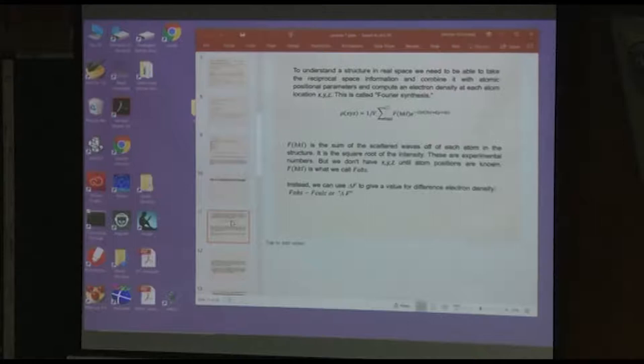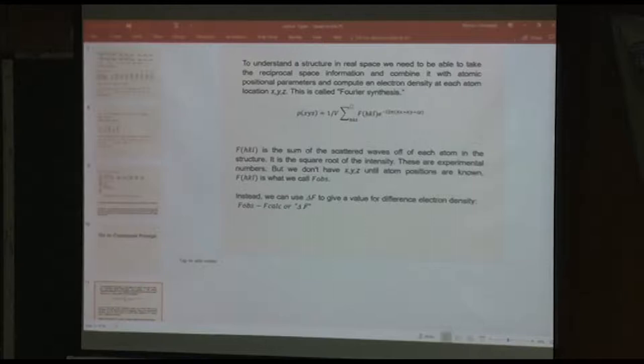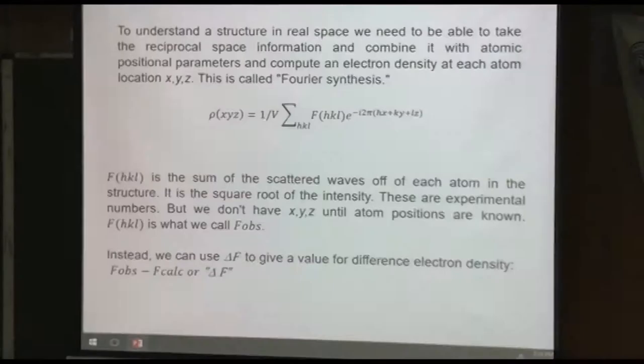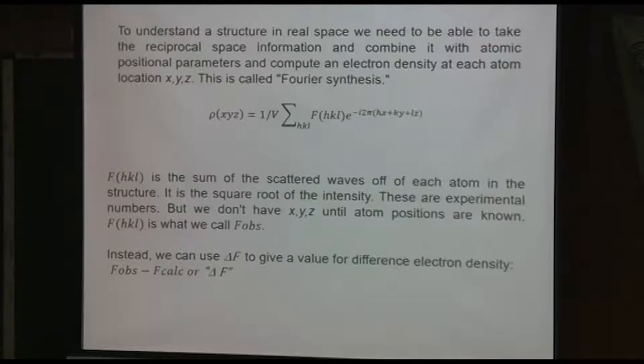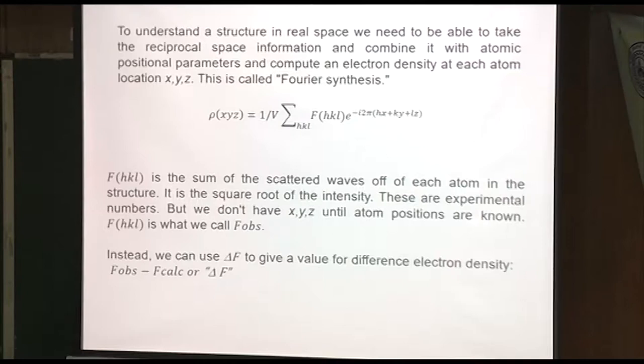The electron density based on x, y, z, if you plot x, y, and z as your axes, is one over v times the sum of all the F obs times e to the minus i, 2 pi. And here's the kicker, hx plus ky plus lz. So you cannot calculate the electron density unless you know x, y, and z.